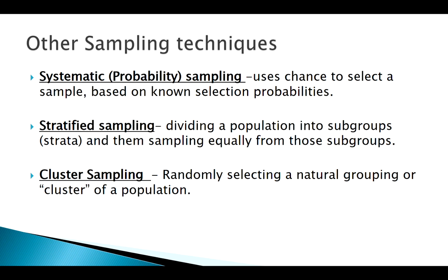Instead, I might randomly choose one block in the city and hope that block is a good representation of the entire city. Here's a block that looks pretty diverse — I'll take that block as my cluster and use it as my sample. Simple random samples are the gold standard, but if we can't get there, there are other ways to go about it.